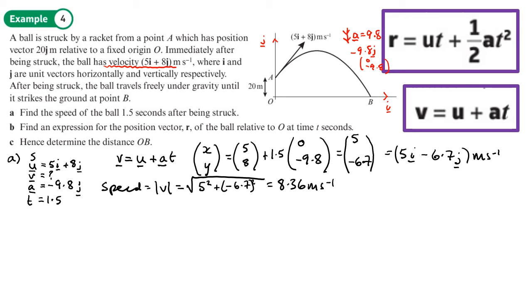Part b says find an expression for the position vector r of the ball relative to O at time t seconds. First, we need to realize that this ball doesn't start at the origin, so whatever we work out, we need to add 20j to it - that's where it starts, 20 up from the origin.